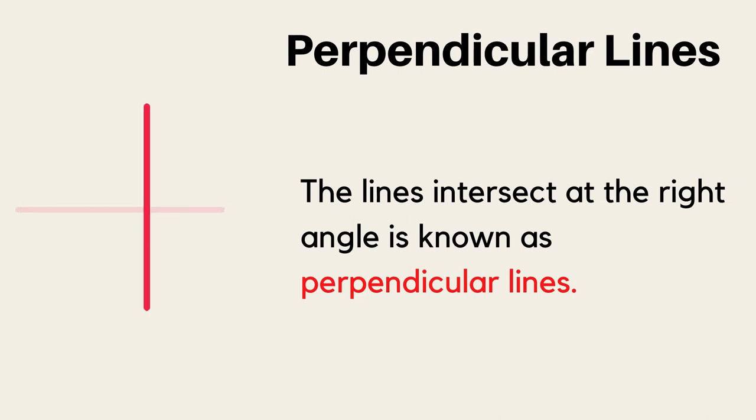Lines that intersect at a right angle are known as perpendicular lines.